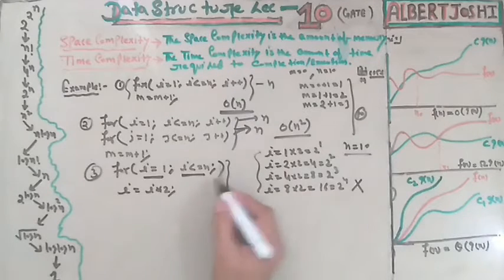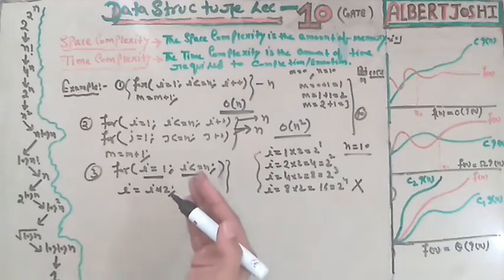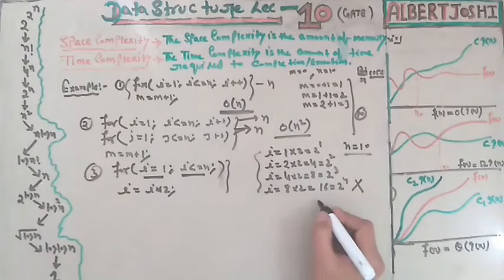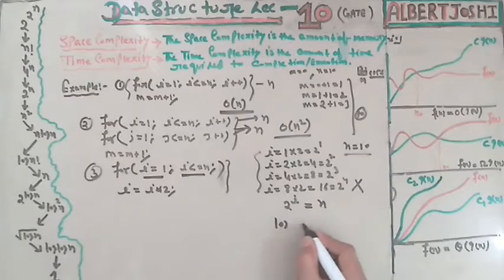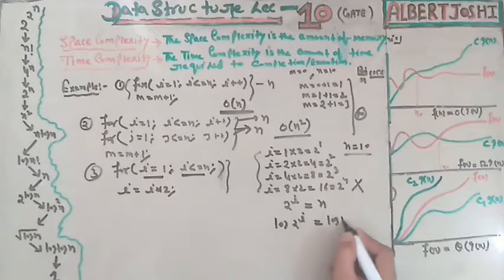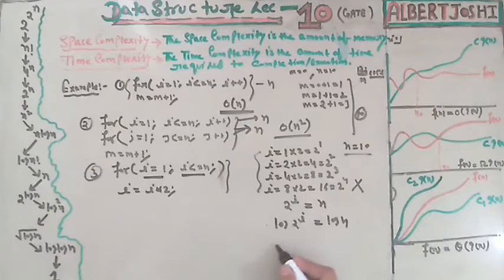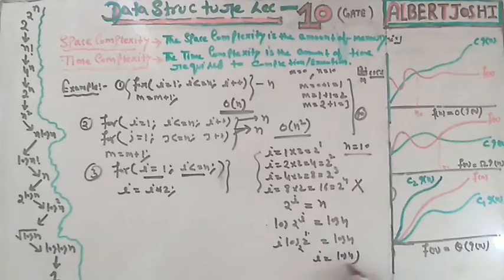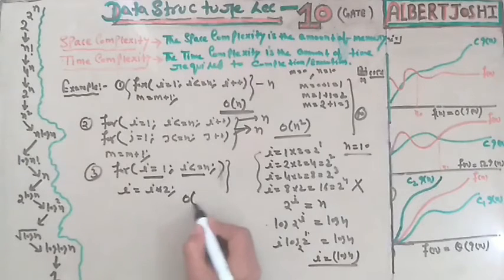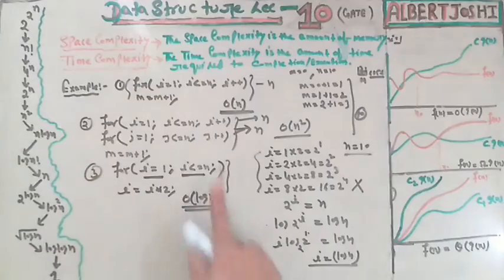To find the time complexity, note that n is totally dependent on 2 to the power i. Taking log of both sides: log(2^i) = log n, so i * log 2 = log n. Since log base 2 of 2 equals 1, we get i = log n. Therefore the total time complexity is O(log n).